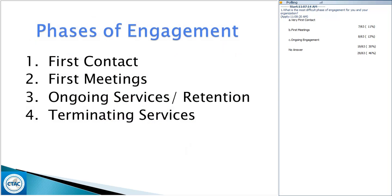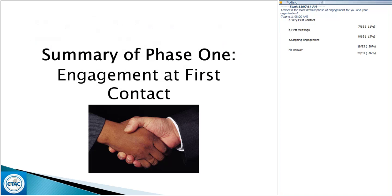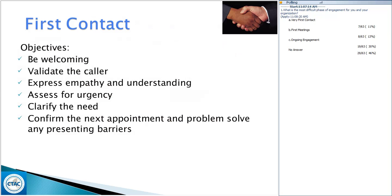I want to summarize phase one from our last webinar — engagement at first contact. The objectives are to be welcoming, validate the person, express empathy and understanding, assess for urgency, clarify the need, confirm the next appointment, and problem-solve any presenting barriers. Not only is it important to assess how urgently we need to see someone, but also to clarify the need — why are you here and how can we help you?